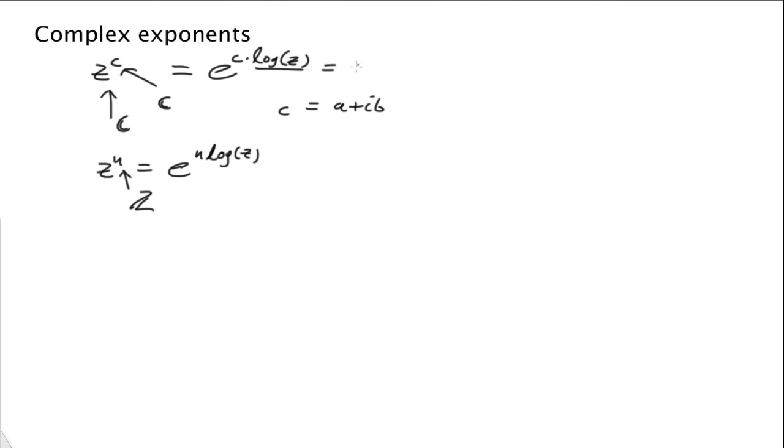And of course the log function can be written as e to the c times - let me rewrite that - a plus ib times, and we write it as natural log of r plus i theta. And then the usual thing we have to do is choose a branch, so we're not dealing with a multivalued log, but a particular value of theta that's within a certain range of values.